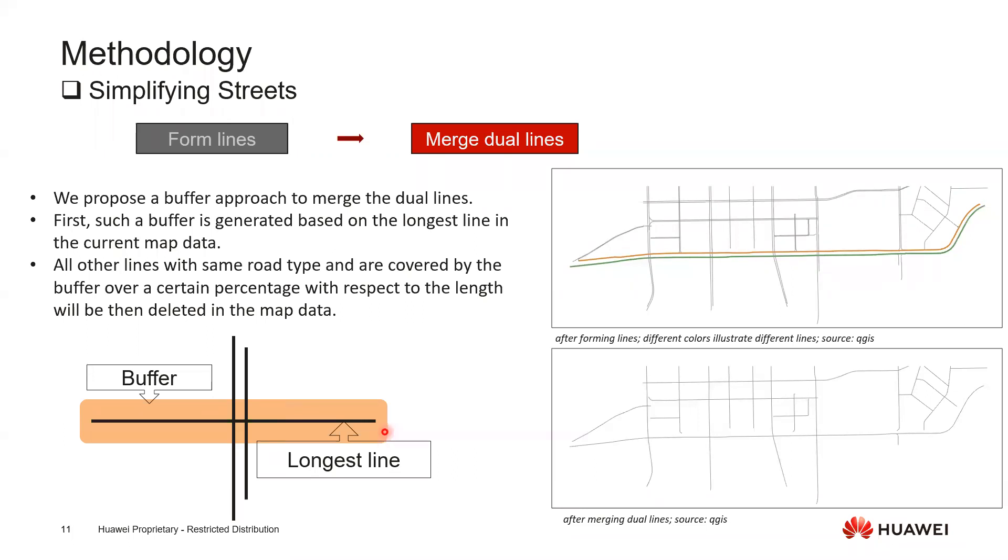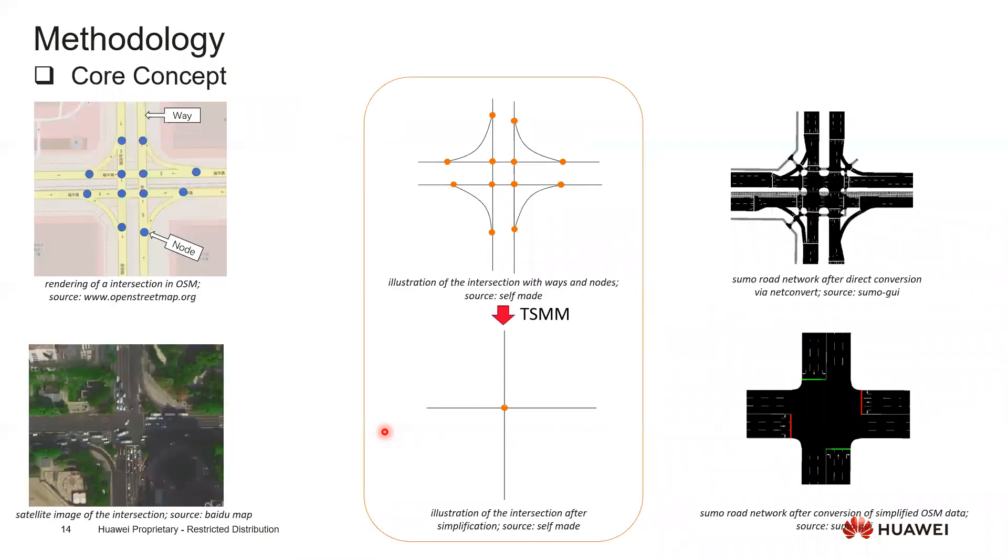So basically then we just need to repeat this process again. You can see right now the longest line is this one - generate the buffer and remove the lines inside the buffer. In this case you can see this is what we got as a result. Before, this intersection consists of four lines and four nodes, and right now it just has two single lines which represent bidirectional ways or bidirectional streets. If we take a look back at the first slide I introduced, this is the core concept - you can see this is how we achieved that.